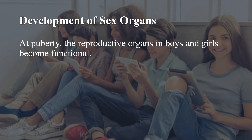The next change is development of sex organs. At puberty, the reproductive organs in boys and girls become functional. In boys, the male sex organs — testes and penis — develop completely, and the testes begin to produce male sex cells called sperm. In girls, the ovaries enlarge, eggs begin to mature, and the ovaries start releasing matured eggs.